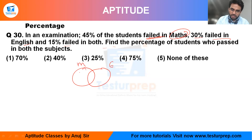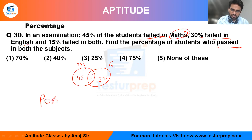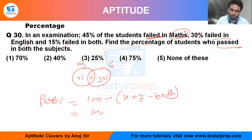Here, this is the first subject math and this is English — 45% failed in math, 30% in English, and 15% in both. If you want to find the pass percentage and the failed percentages are given, it will be equal to 100 minus (x + y − both).